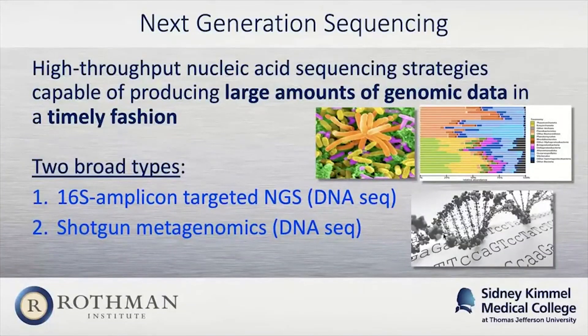What is NGS? It refers to a collection of high-throughput DNA sequencing strategies that can process large amounts of data in a timely fashion. It's typically done in a massively parallel fashion, with millions or even billions of sequencing reactions occurring at the same time. This parallel nature is really what differentiates it from traditional Sanger sequencing.